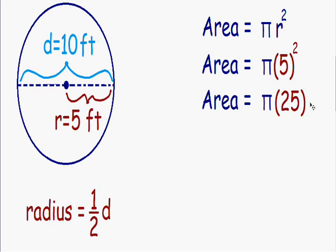And it is always standard, whenever you are multiplying a number by pi, that you put the number in front of the pi instead of after. So instead of pi times twenty-five, I am just going to write twenty-five pi.